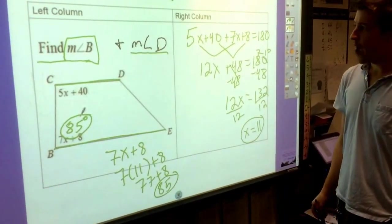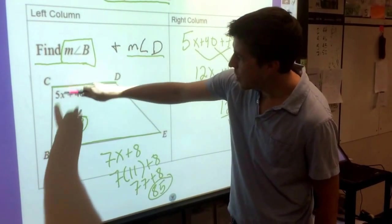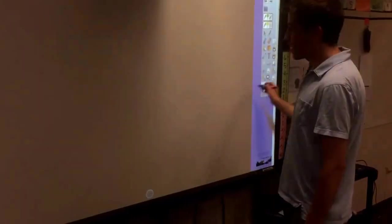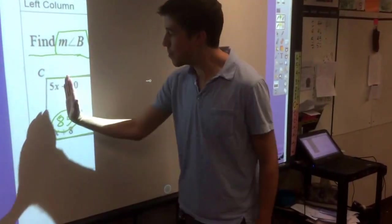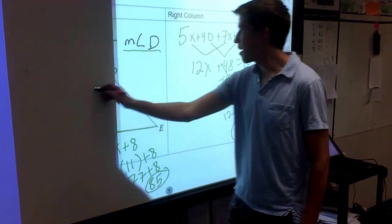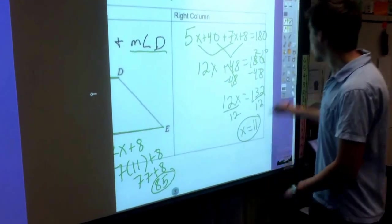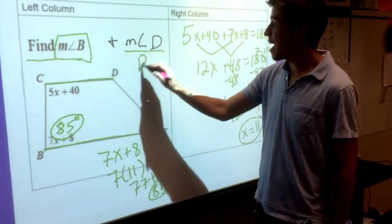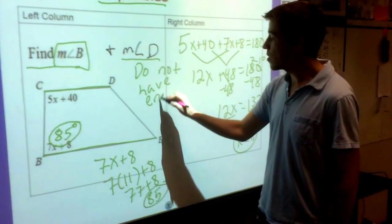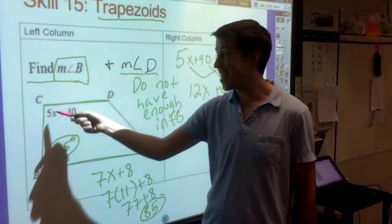Now the question also asks you to find the measure of angle D. Now we know how to go from angle B to angle C because those are supplementary. But like we discussed in the previous problem, we only know things about the two angles that are on the same side and in between the bases. So since I don't know anything about angle E, that means I don't know anything about angle D. So in this question, we actually do not have enough information. We only have enough information to talk about angle C and angle B since that's all we gave you in the problem.